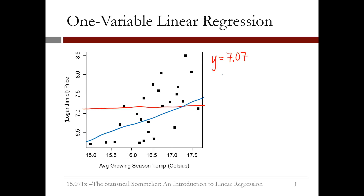The equation for the blue line is y = 0.5 times average growing season temperature minus 1.25. This linear regression model would predict a higher price when the temperature is higher.